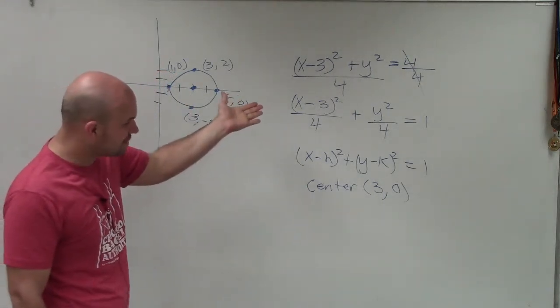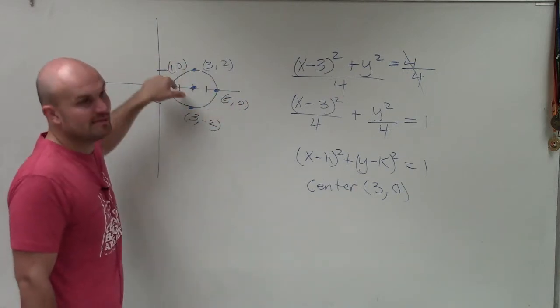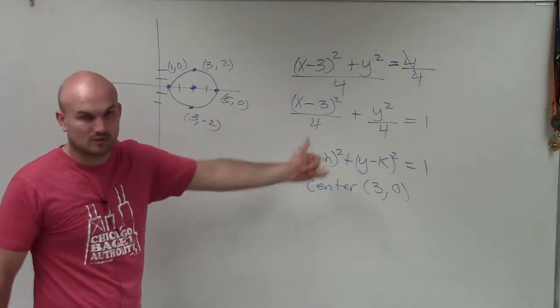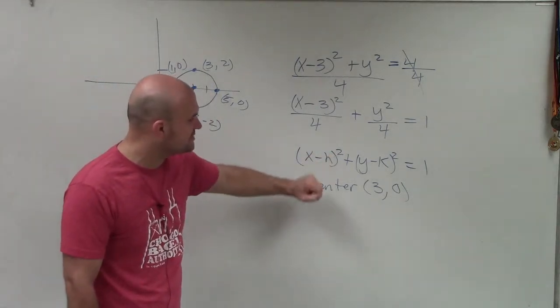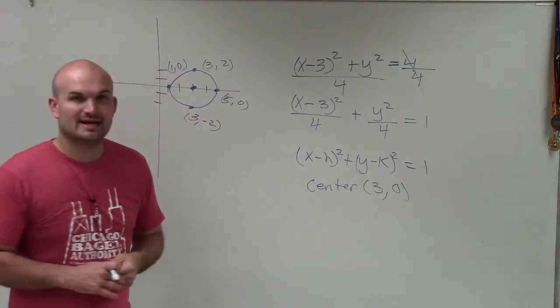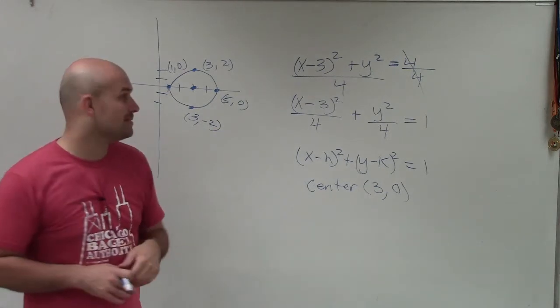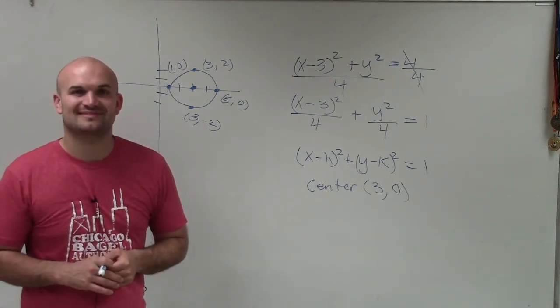But again, this produces a circle. So therefore, these are all just going to be points on the graph. They're not really vertices, co-vertices, because they're all equal in length. But we can go ahead and label those points, make sure we notice that it is a circle with a center. And there you go, ladies and gentlemen. That is how you graph a circle. Thanks.